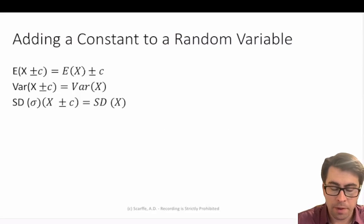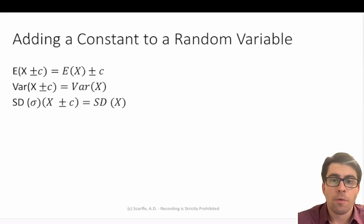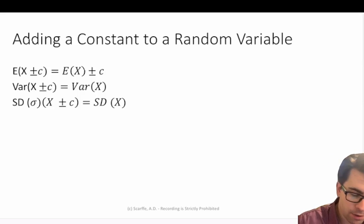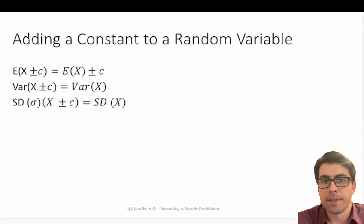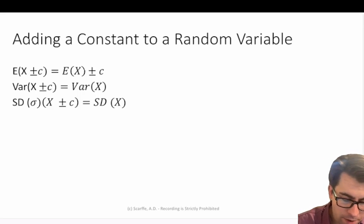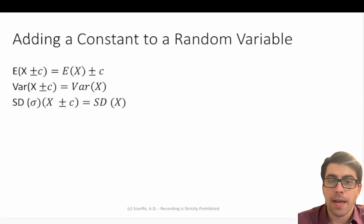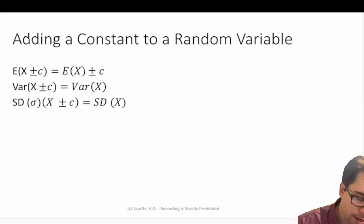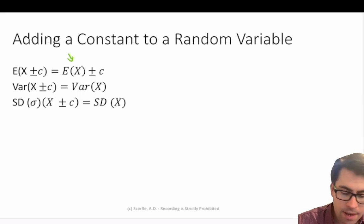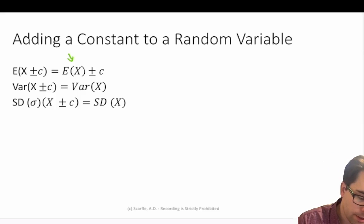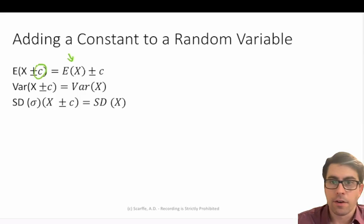Let's start with how do we add a constant to a random variable x. We can start by looking at how do we calculate the expected value. The expected value is equal to x plus or minus that constant — in other words, we take our expected value of x and we add or subtract whichever constant is identified in our equation.